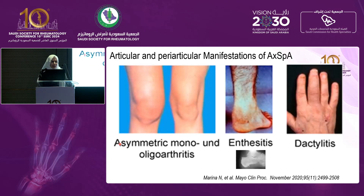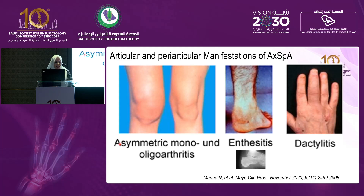Other common features of axial spondyloarthritis include peripheral arthritis, with common joints being lower extremities — knees, ankles, and hips — presenting asymmetrically, usually two to four joints involved. Another feature is enthesitis, meaning inflammation at the tendons and ligaments at their site of bone attachment, presenting with pain and tenderness on examination. The most common sites are the Achilles tendon and the attachment of the plantar fascia at the calcaneum.